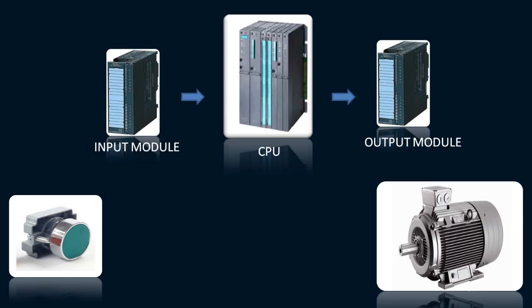When a person in the field pushes the button to start a motor, that is already programmed in the PLC and the PLC acts based on that condition to turn on the motor. The CPU is in digital language and sends the signal to the output module. The output module acts as an interface between the CPU and the final control element — in this case, the motor. The digital language from the CPU is converted by the output module into the electrical signal that the field element understands.